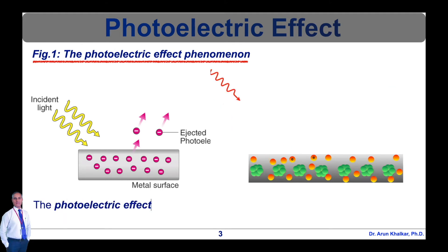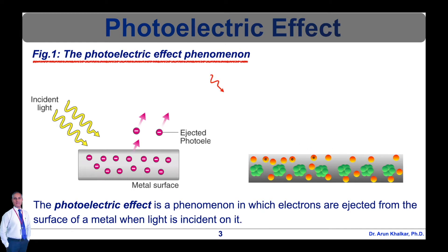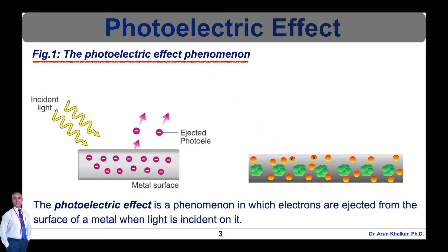The photoelectric effect occurs because the electrons at the surface of the metal tend to absorb energy from the incident light and use it to overcome the attractive forces that bind them to the metallic nuclei. An illustration detailing the emission of photoelectrons as a result of the photoelectric effect is shown in this animated diagram.